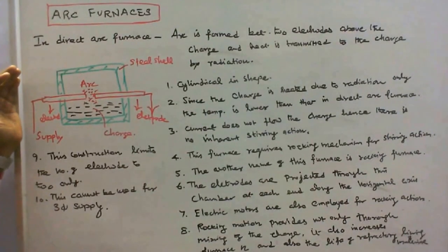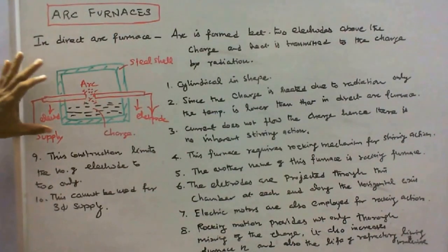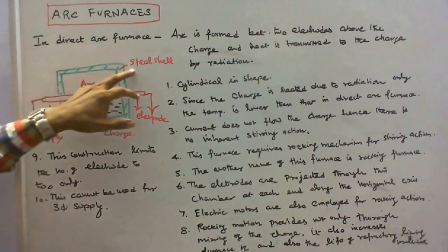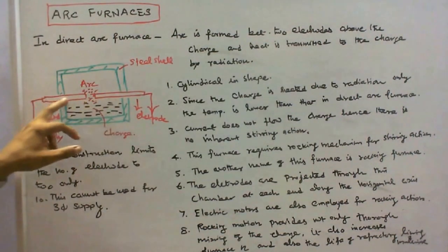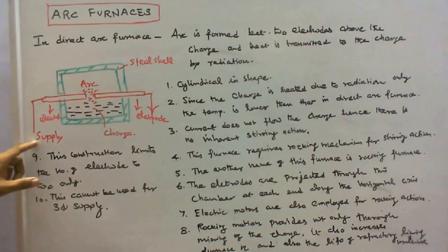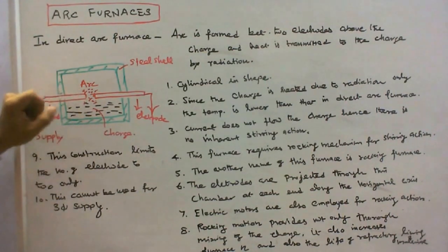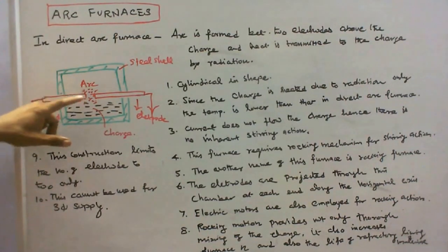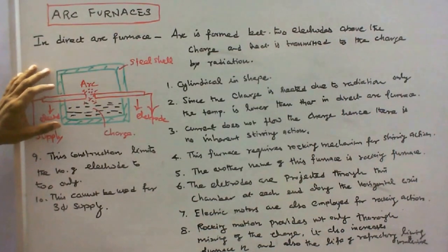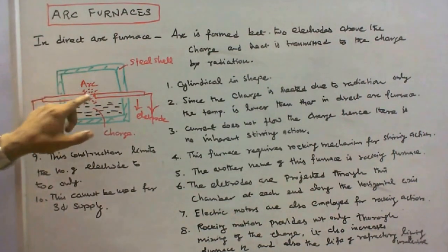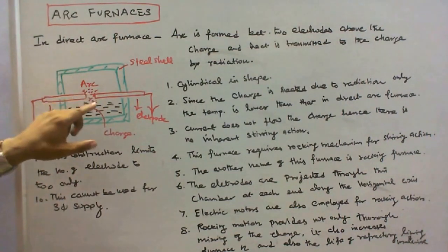Indirect arc furnace. This is the construction: steel shell and these are two arc electrodes. We are giving supply. This is the charge. This is the arc developed in between the two electrodes. Generally this type of furnace is in cylindrical shape.